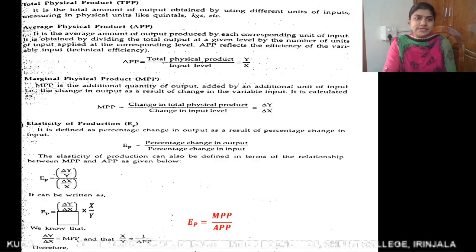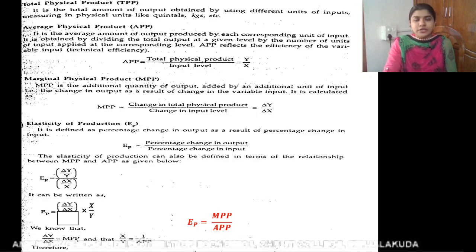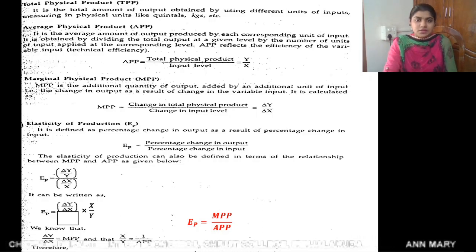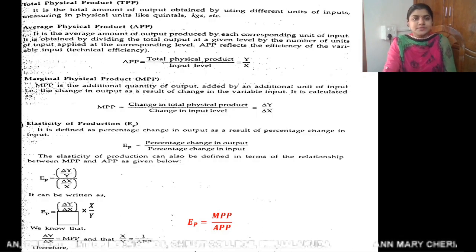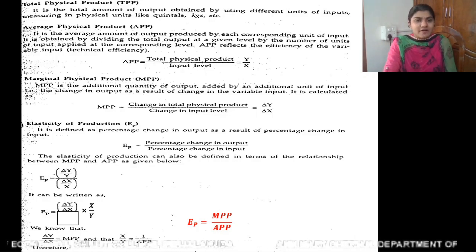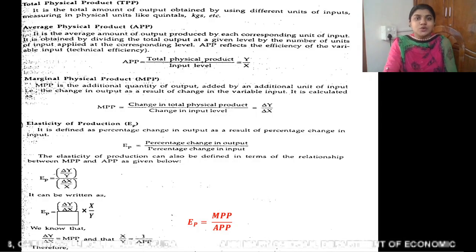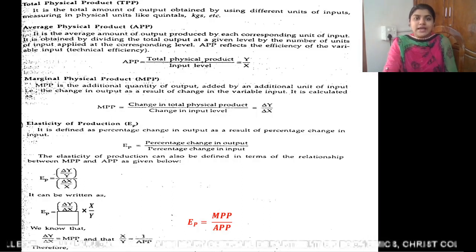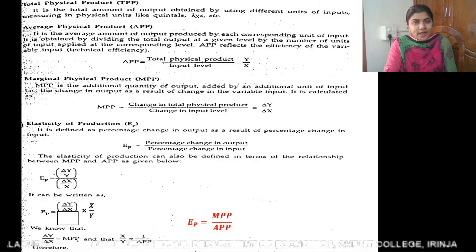The second concept is Average Physical Product. Average physical product is the average amount of output produced by each corresponding unit of input. It can be calculated by dividing total physical product by the number of units of inputs applied. So, APP is equal to total physical product divided by input level, that is Y by X.